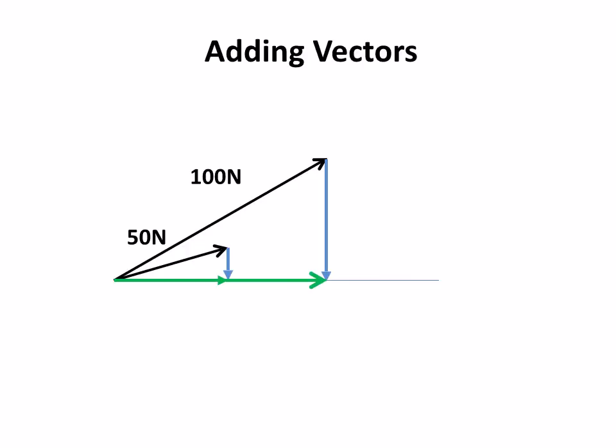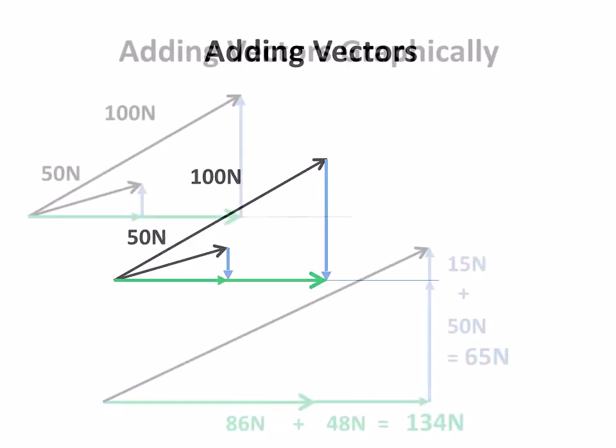And what we can do, we can add these two vectors. Now, we can't just add the 100 and the 50, because they're at different angles. What we can do is add all the horizontal components and add all the vertical components, and that will form a new triangle.